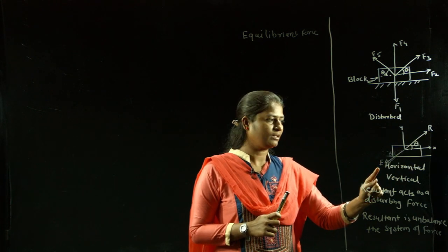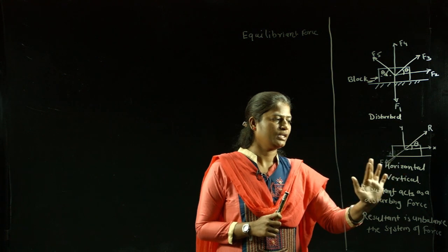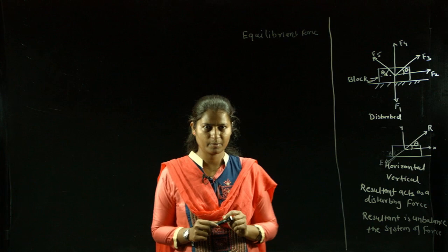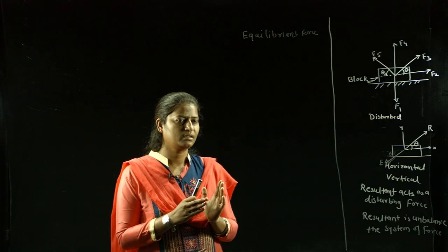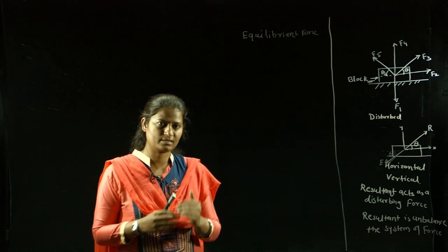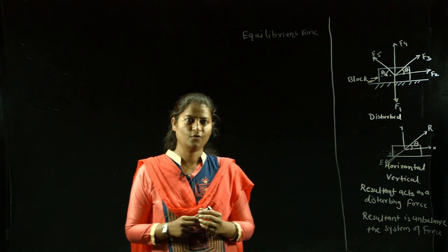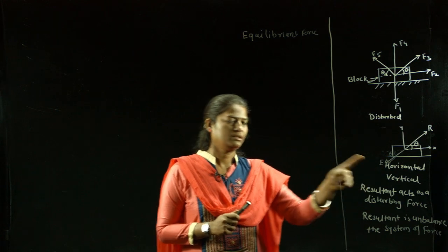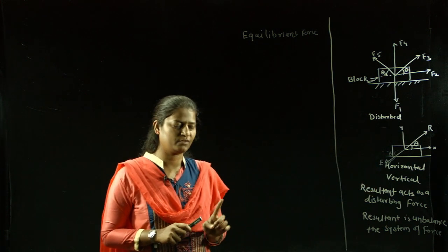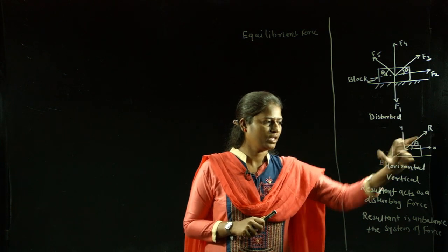Since the equilibriant force has the same magnitude as the resultant force, the effect of the resultant is nullified. Due to the equilibriant force, if the body is in a rest condition, it remains at rest because the equilibriant opposes the resultant. The equilibriant is a single force which cancels the effect of the resultant force.